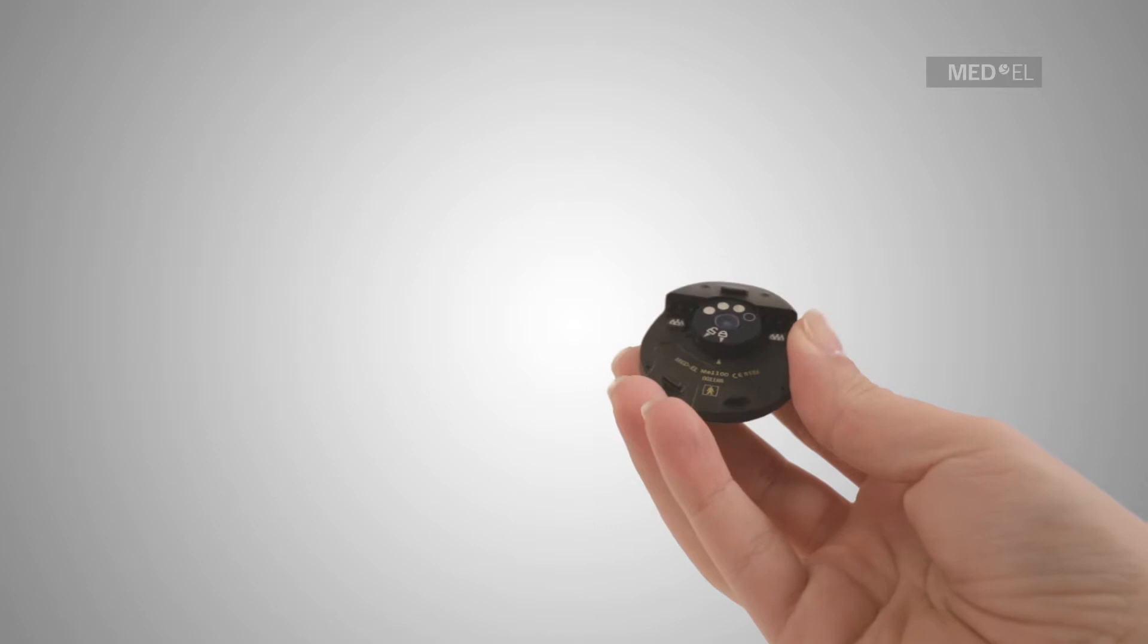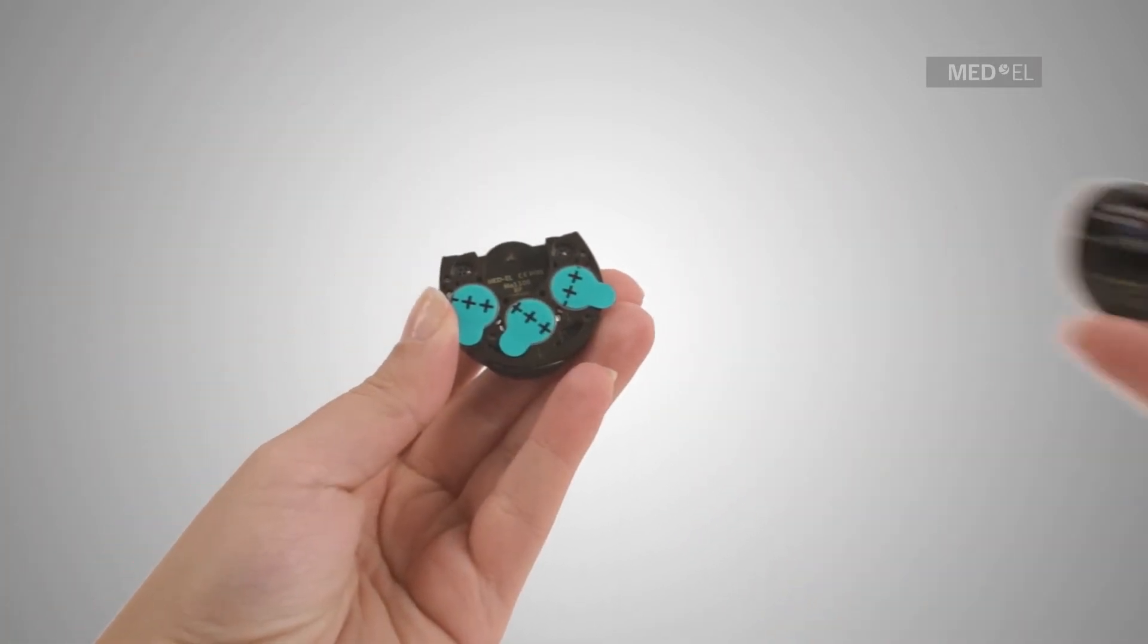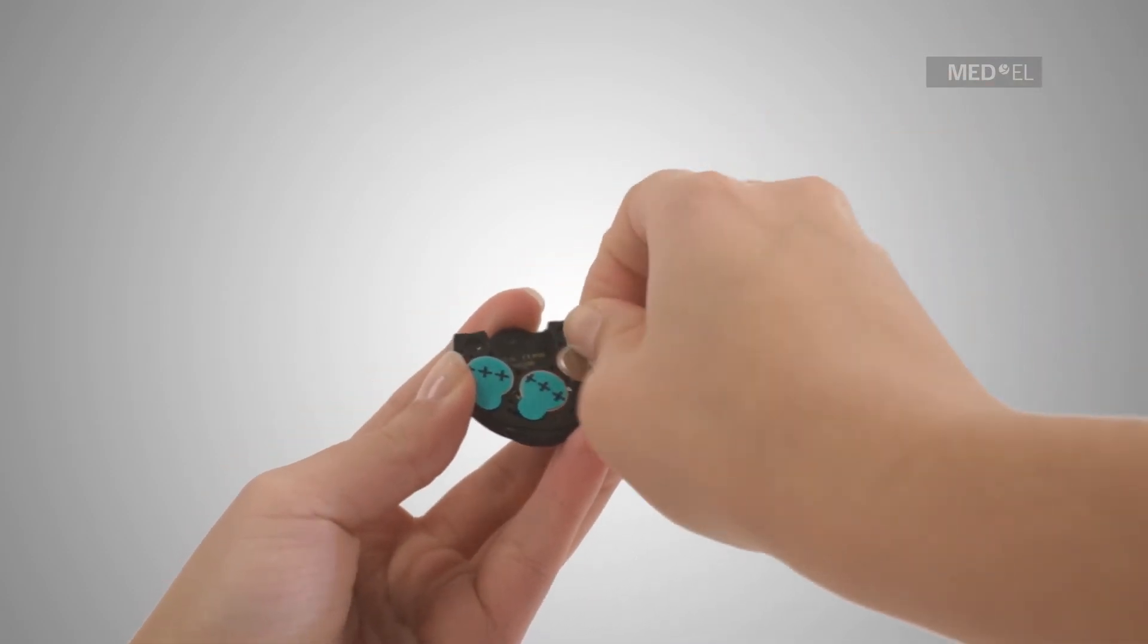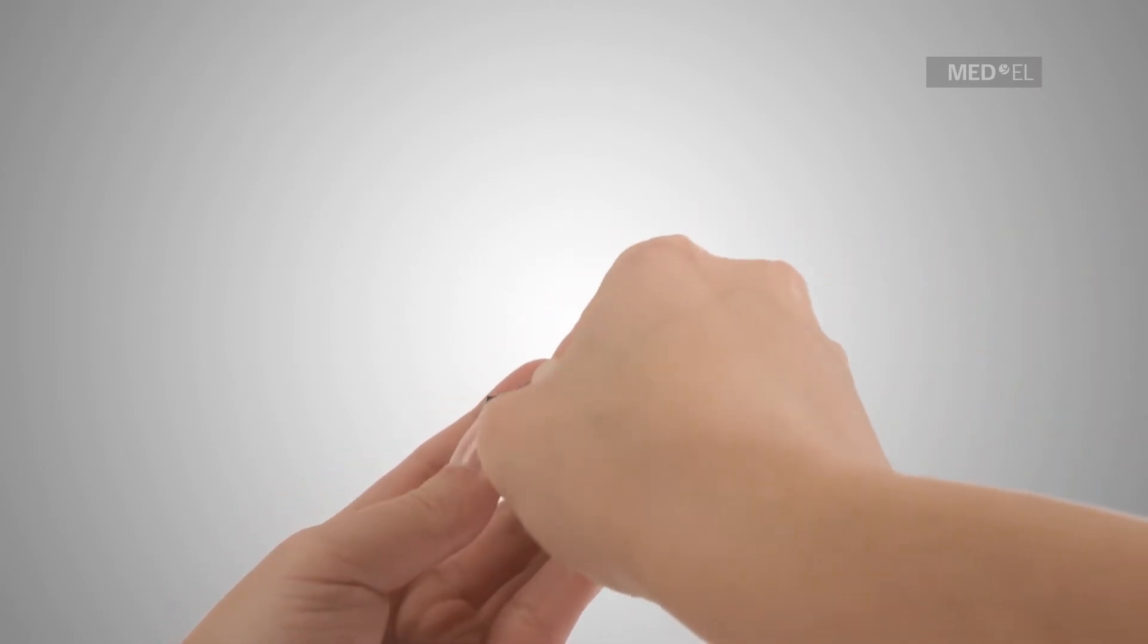The foil covering the zinc air batteries must be removed before use. Ensure that the PLUS pole is facing outward. When correctly inserted, the PLUS sign will still be visible after insertion.